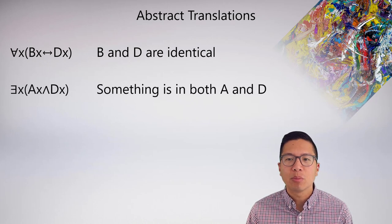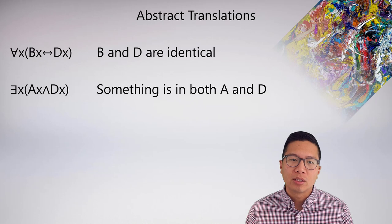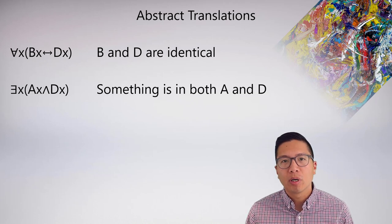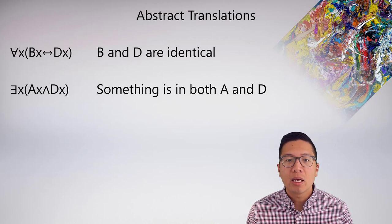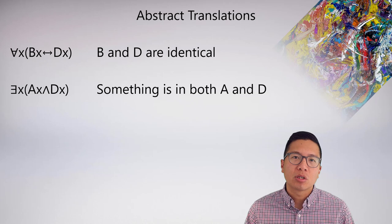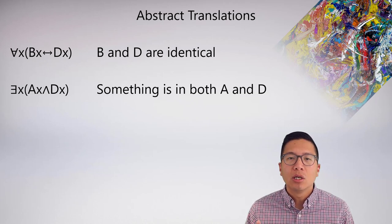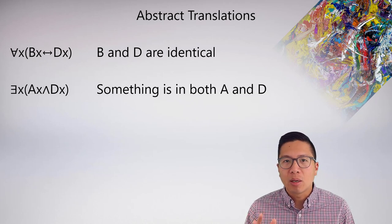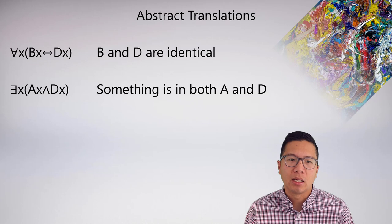Here's another example: 'there exists x, ax and dx.' This is nice and straightforward — it means that something is both an a and a d. Notice there's a single existential here, so that means something is both an a and a d.